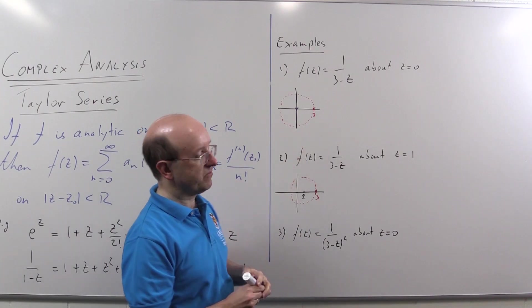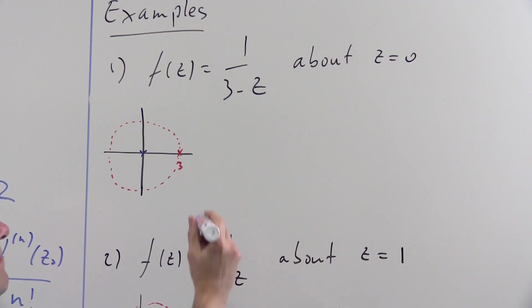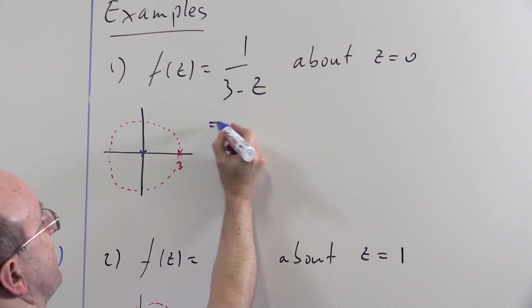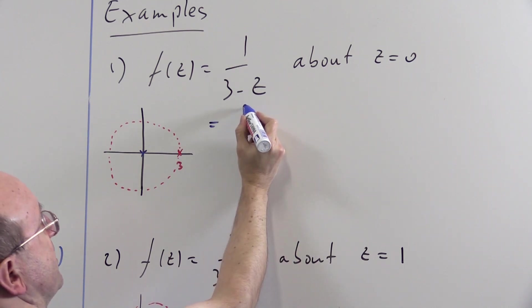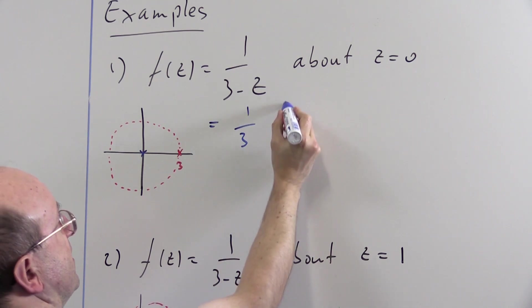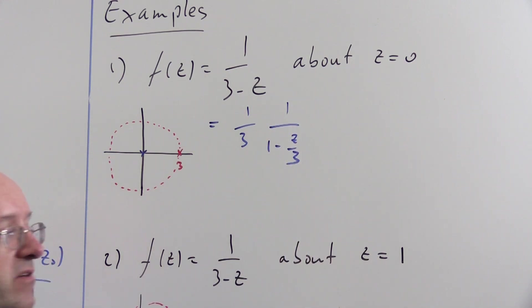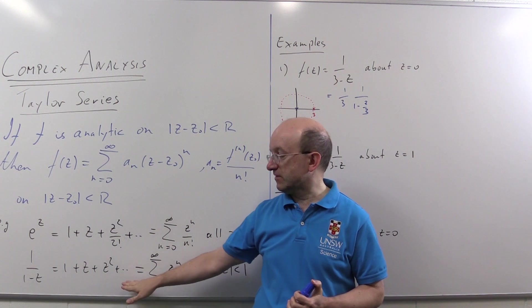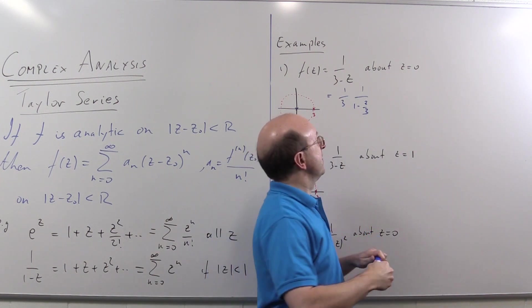So for this one, we're just going to manipulate the series for one over one minus z. We will write f as... Well, in fact, the simplest thing to do is to take out the factor of three. So we'll do that. It's one third times one over one minus z over three. So now we use this formula here to write the thing in terms of a series.